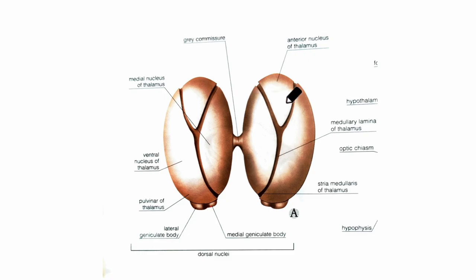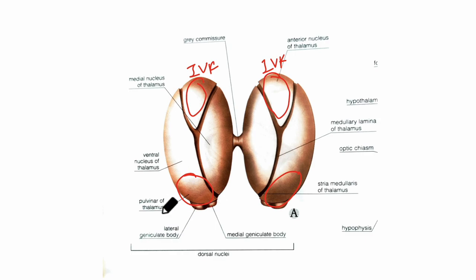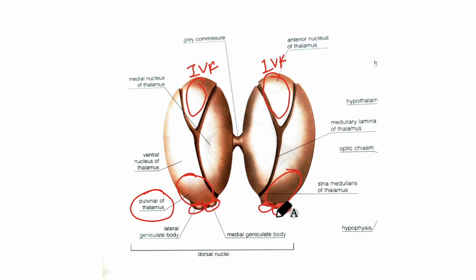Now let's look at the right and left thalami from its superior aspect. At its anterior end we can see the anterior nucleus — it is narrow and forms the posterior boundary of the interventricular foramen. Next we have the posterior end which is expanded and is known as the pulvinar of the thalamus.